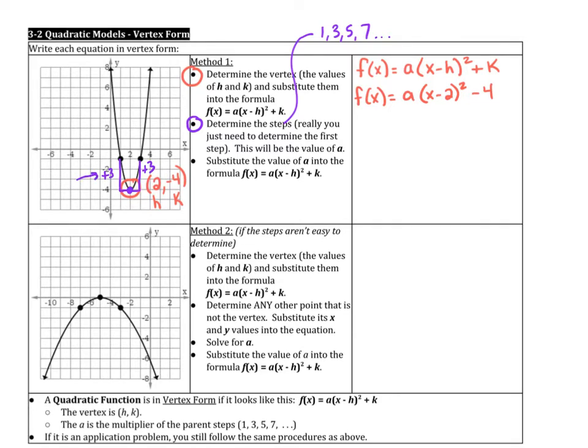So that first step means that the first step is supposed to be 1 and now it's 3, so that means the step was multiplied by 3. So that is the a value. Since the first step is typically 1, and in this case the first step is 3, whatever that first step is, that's your a value.